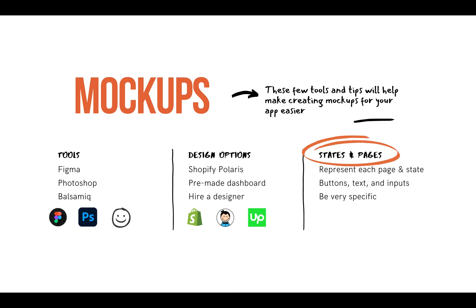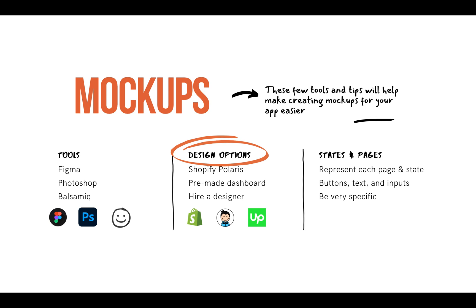Let's talk about your design options, because this will affect the tools you end up using. We talked about Shopify Polaris, which we recommend if you're developing a Shopify app. Other options include buying a pre-made dashboard — if you search Google for pre-made dashboards, you'll find many affordable options that give you a ready-made design framework and components, allowing you to get a nice-looking design without hiring a designer. Alternatively, if you want something completely custom-made, you can hire a designer on Upwork or Fiverr to create your entire design framework from scratch, though this is the longest and most expensive option.